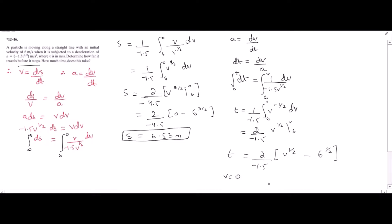From here, if you put v equals 0, this would be 0. So t is equal to 2 over negative 1.5 into negative 6 to the 1 over 2, so we have t is equal to 3.27 seconds approximately.